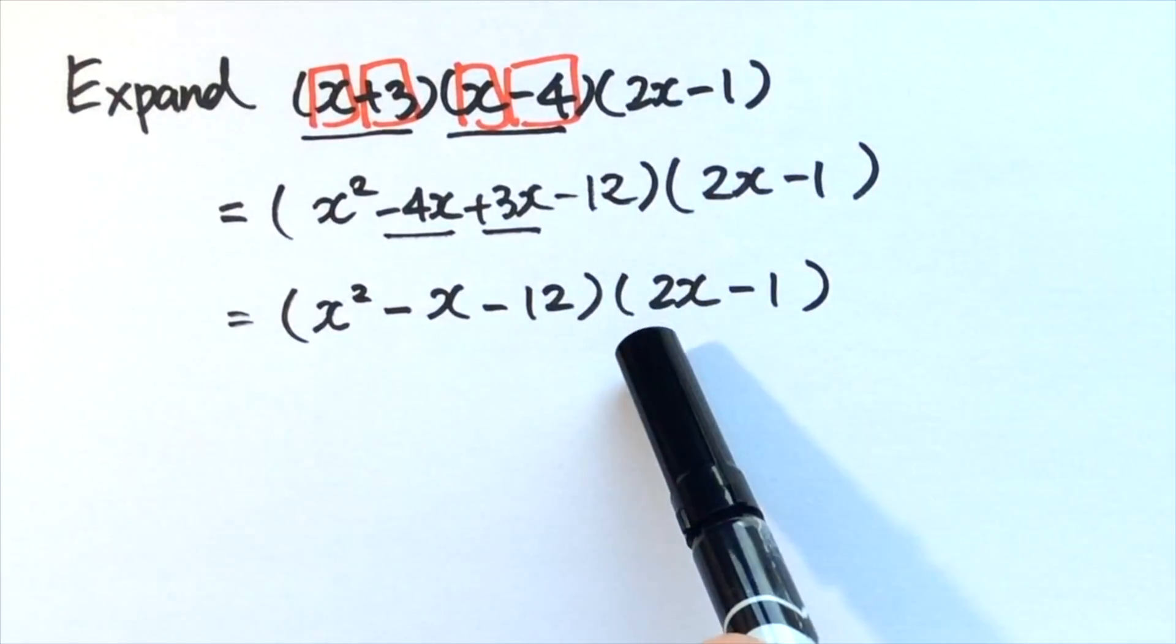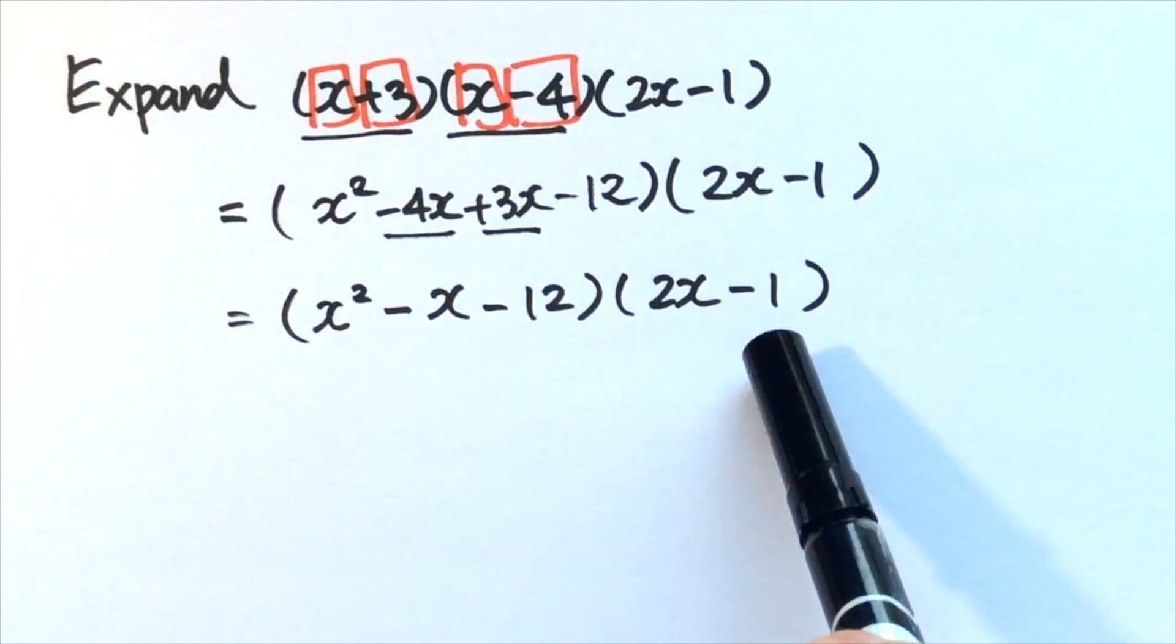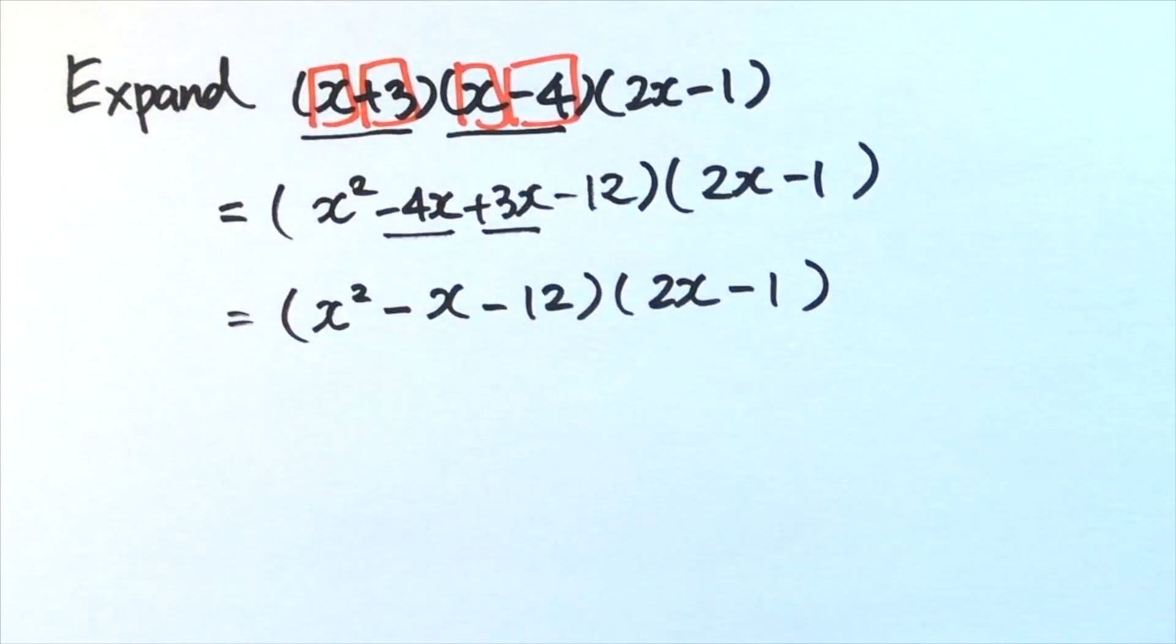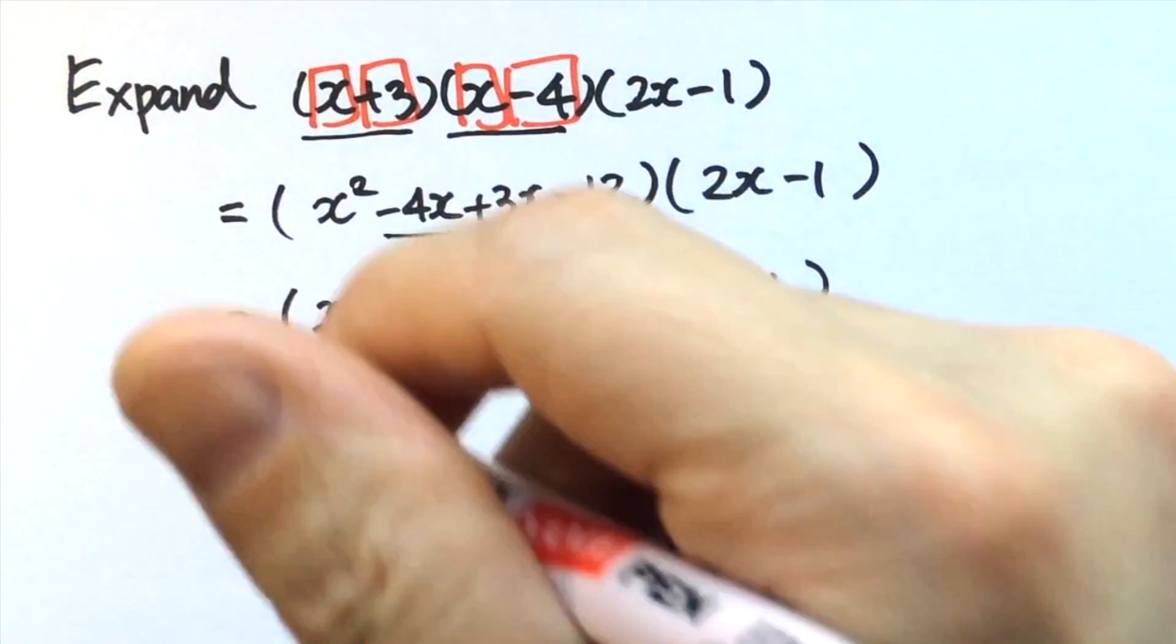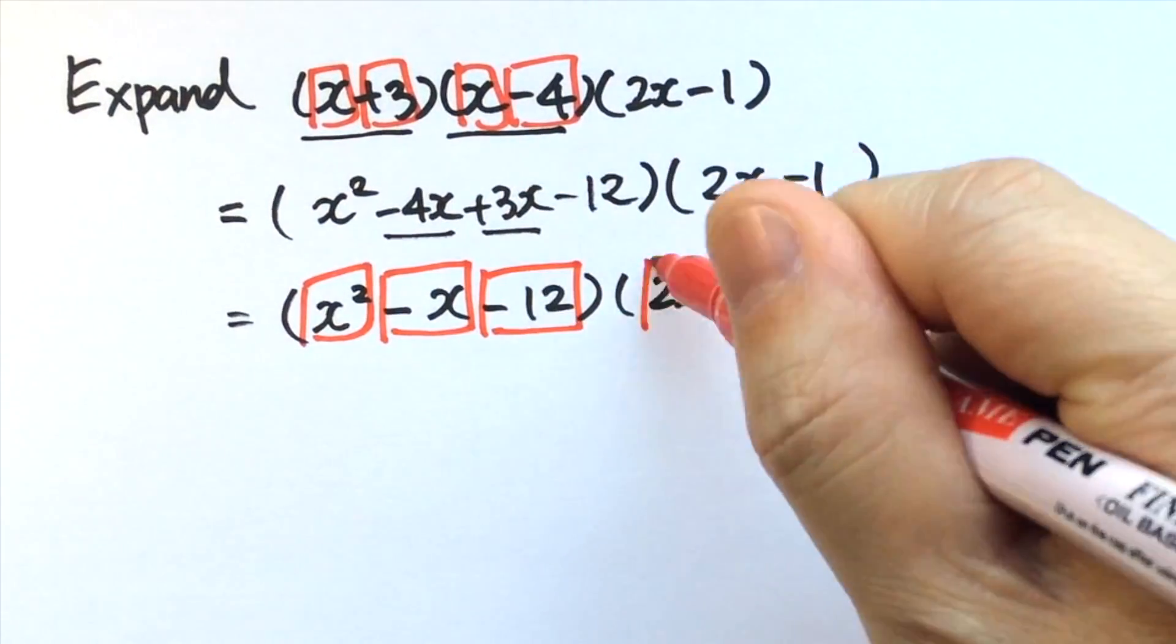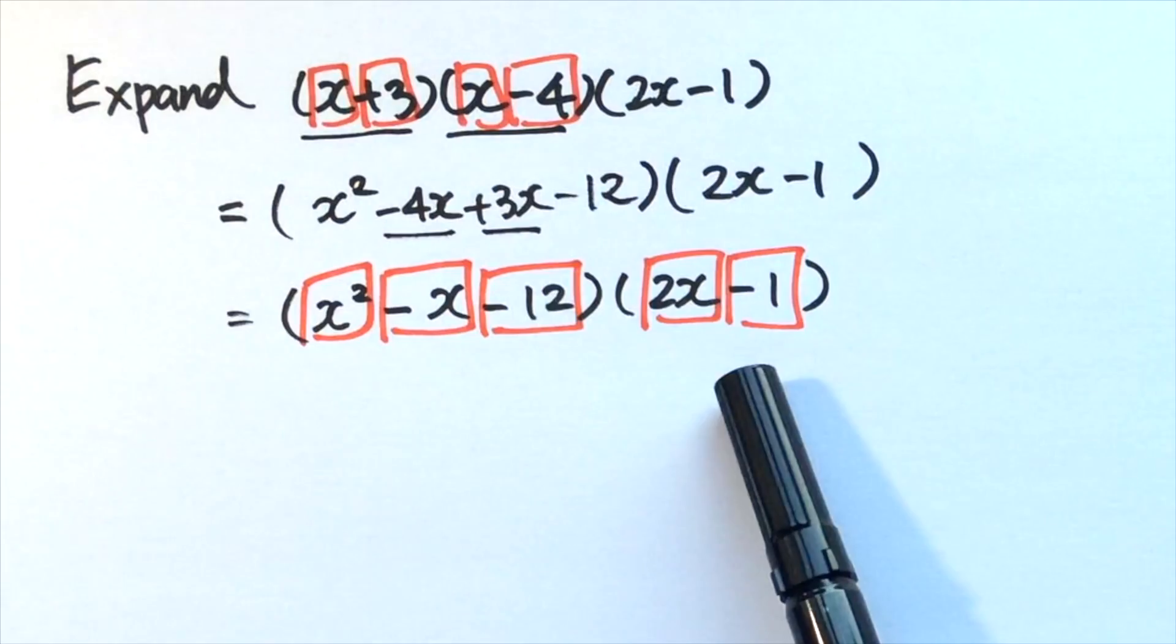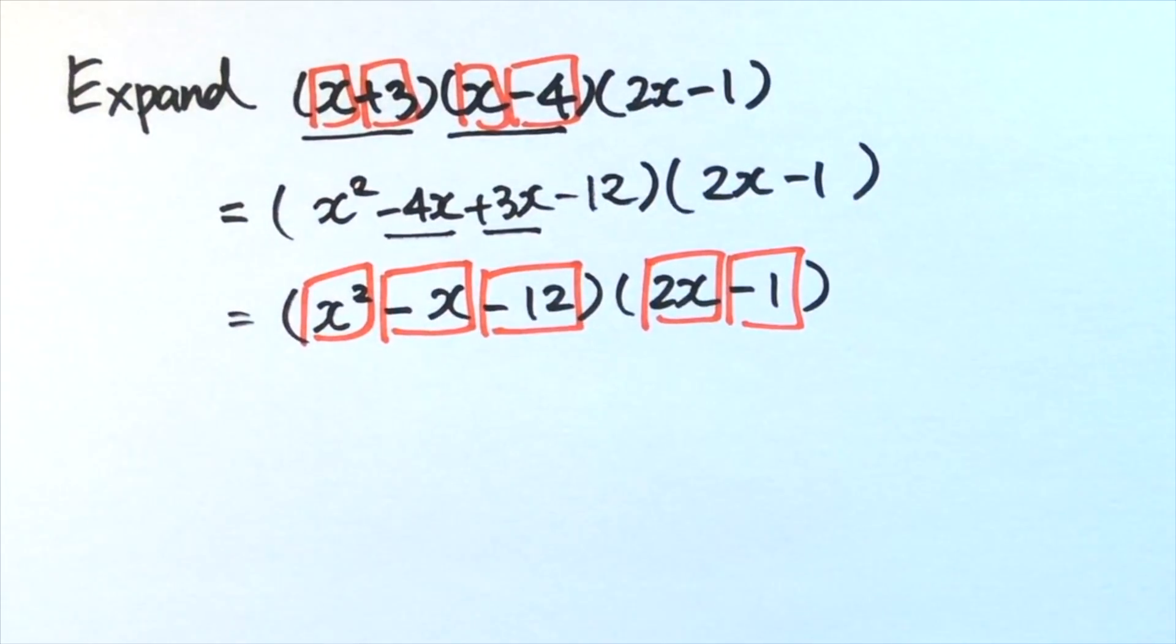Now we can remove the bracket for the second bracket, 2x minus 1. In the first expression, this is a trinomial with three terms. But we can apply the same distributive law to the expression. So three terms times two terms, after we remove the bracket, there should be a total of six terms.